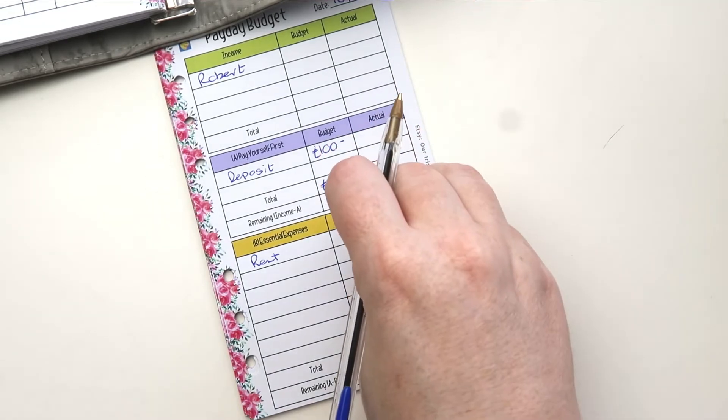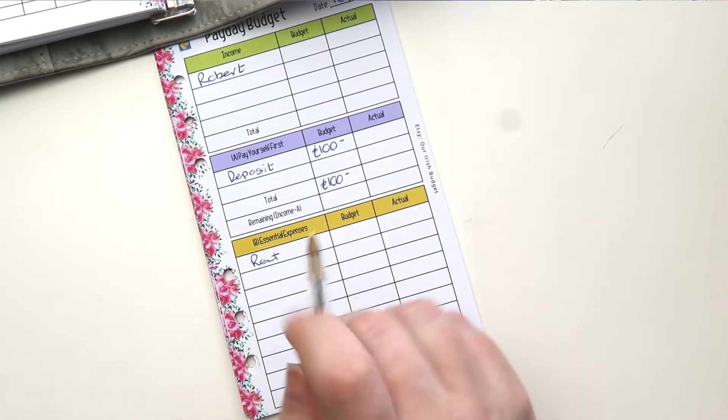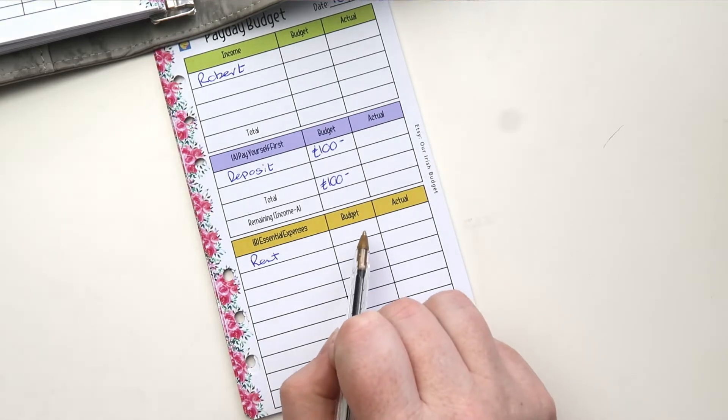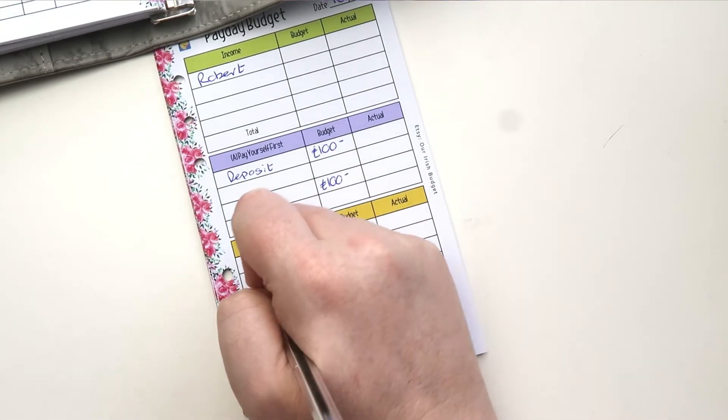So our rent, we're going to put some money towards that. Then we have utilities.